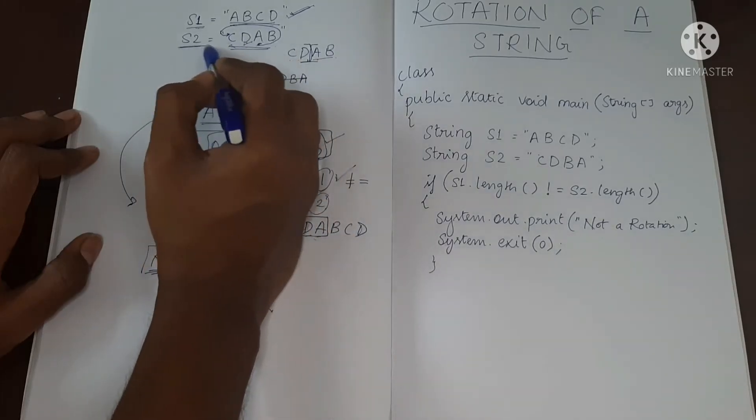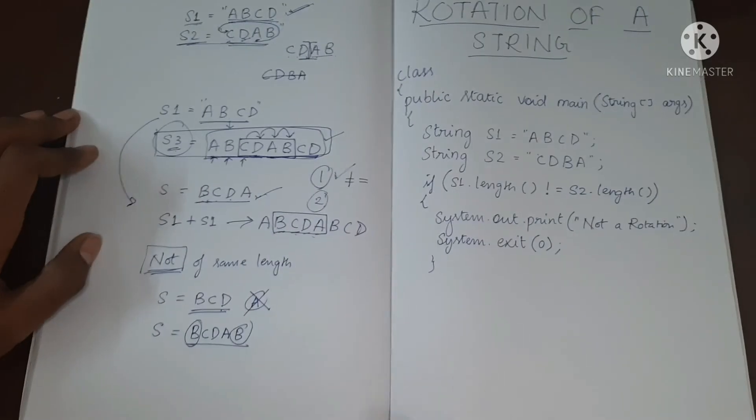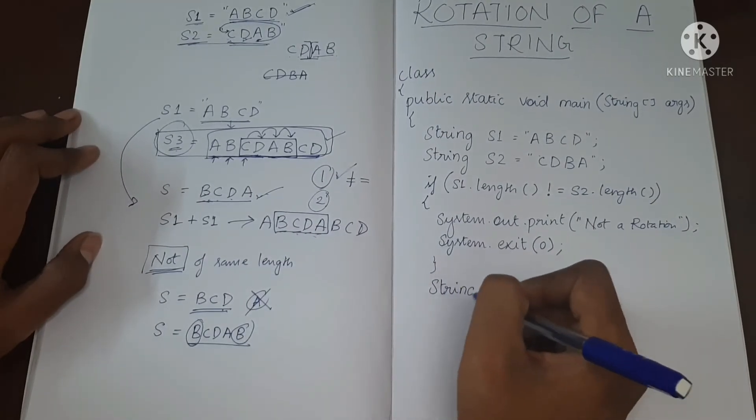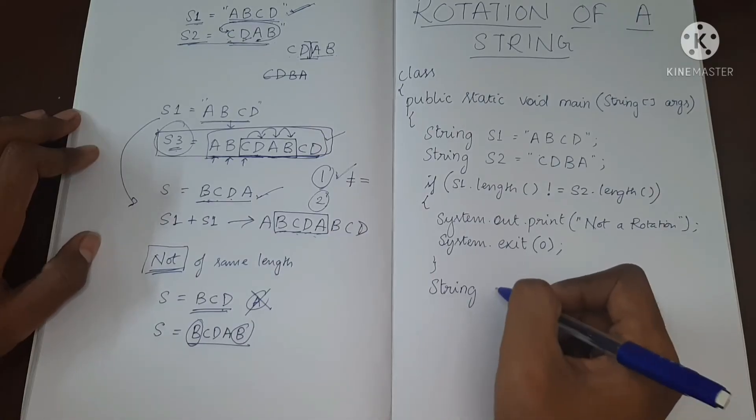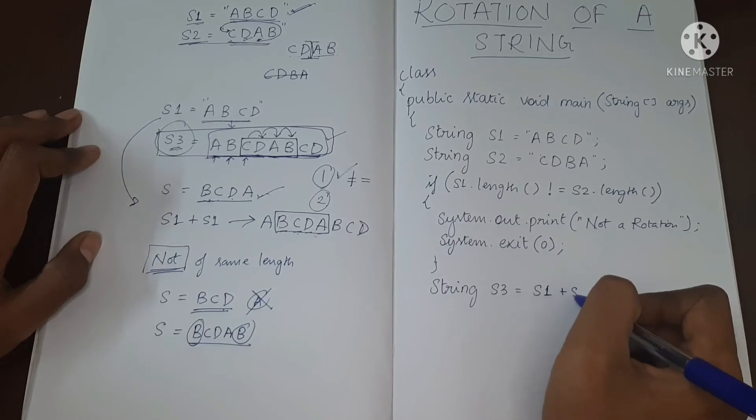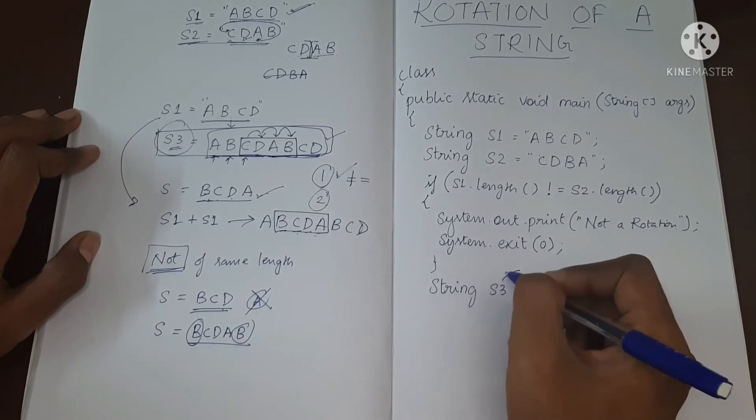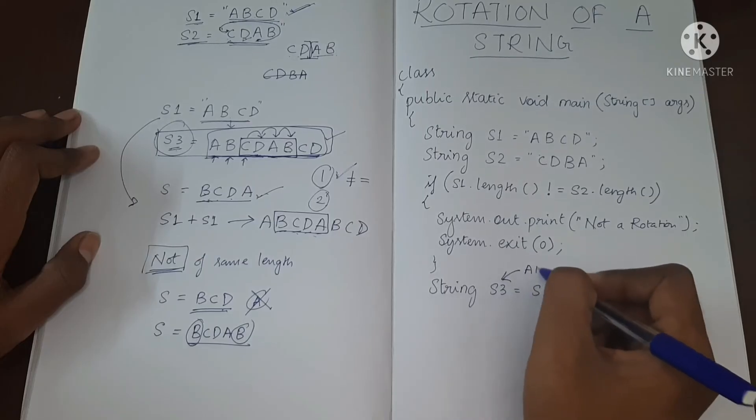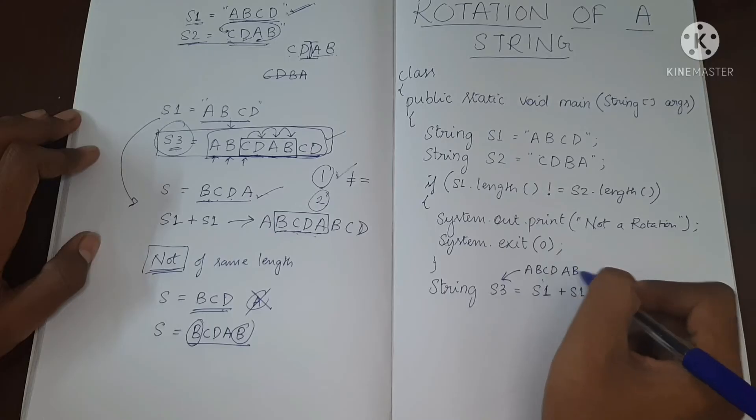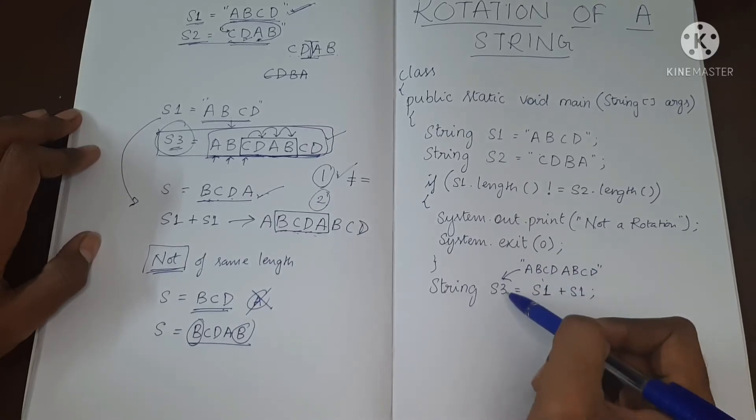And then we'll check if S2 is present in the new string. Let's do that, we'll create a string S3 equal to S1 plus S1. So S3 will now have A, B, C, D, one S1 and then one more S1. Okay, now S3 will have this.